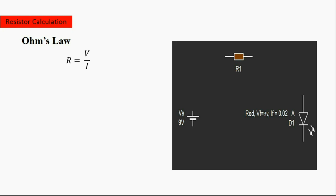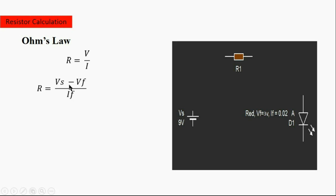To calculate the resistor value for an LED, we use Ohm's law: Resistance equals voltage divided by current. Our LED has a forward voltage of 3 volts and a forward current of 0.02 amperes, as shown in the datasheet. Our power supply is 9 volts. The resistance equals the voltage drop across the resistor — which is the supply voltage minus the forward voltage of the LED — divided by the forward current.